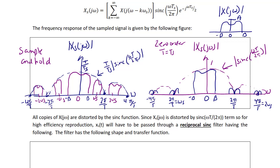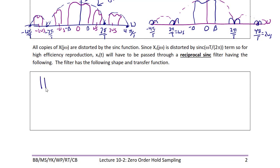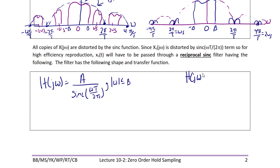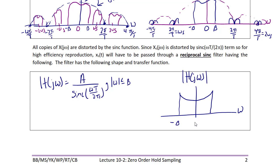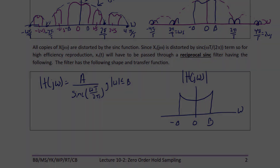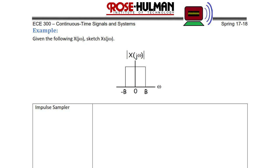Since XS(jω) is distorted by the sinc(ωT / 2π) term, for high-fidelity reconstruction XS(t) must be passed through a reciprocal sinc filter. The transfer function of this filter is H(jω) equals A over sinc(ωT / 2π) for |ω| ≤ B, and the shape curves based upon the inverse of the sinc rather than being flat.